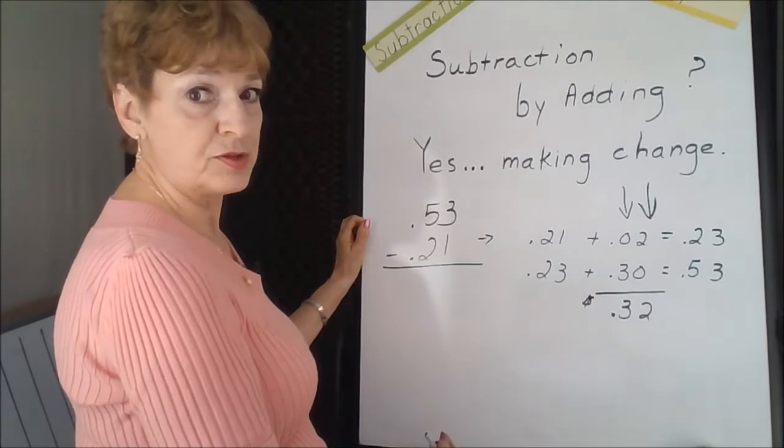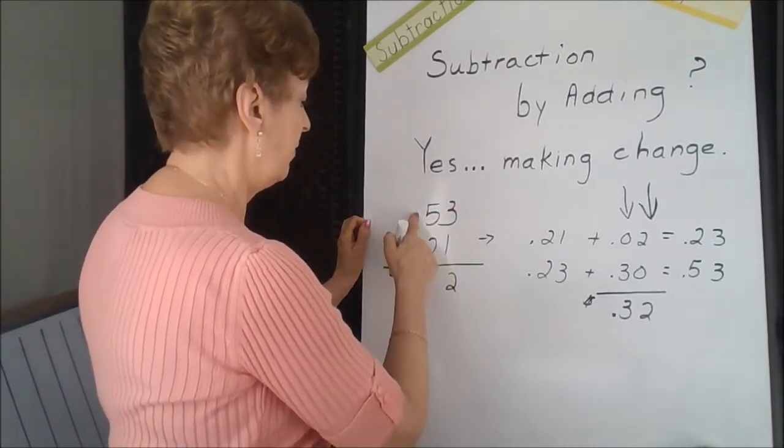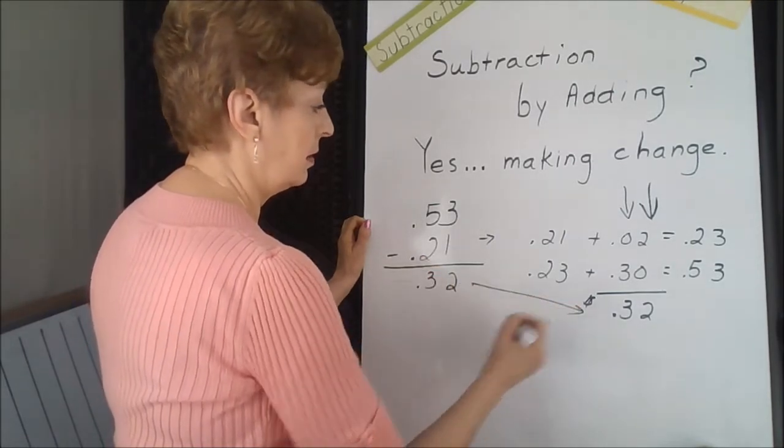If I did the traditional subtraction algorithm, three take away one is two, five take away two is three. We've matched.